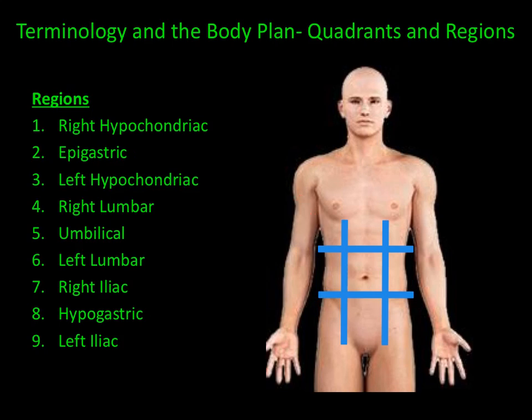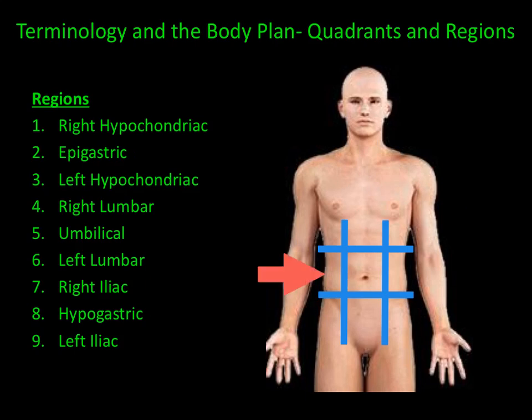The next region is the epigastric region. The prefix epi means above, and gastric refers to the stomach. The next region is the left hypochondriac region. And the next region is the right lumbar region, lumbar referring to the lower back.